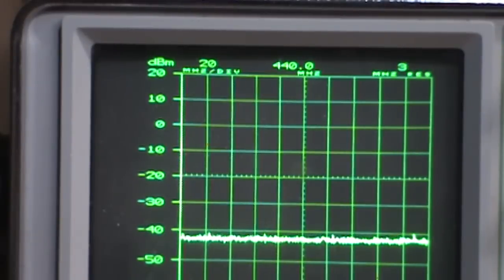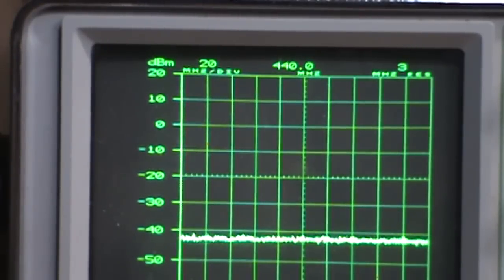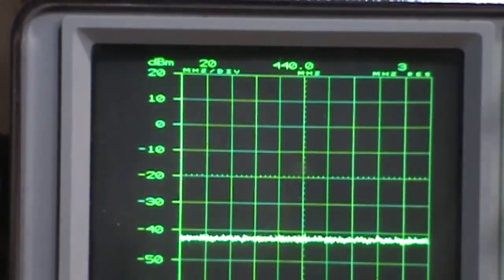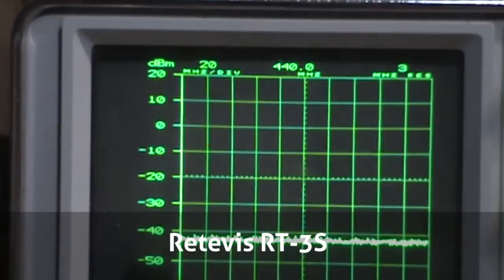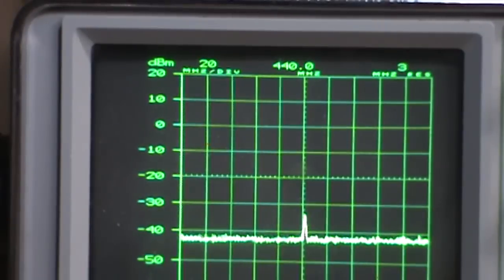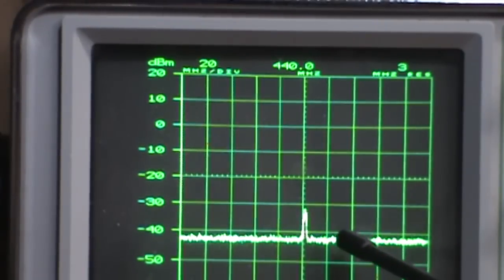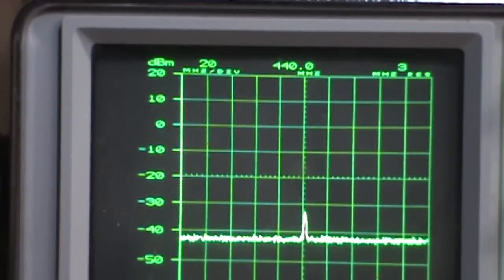So now I've set up the spectrum analyzer, set it at 440 MHz. If we take a look at, or just do some simple math, 146 times 3 is going to give you about 439. So that would be the third harmonic. So if there is a spur on any of these harmonics, we should be seeing it in this sweep. First of all, our Rattivus RT3S. Well, see, now we do have a spur there at about negative 30 dB.